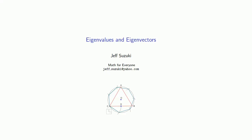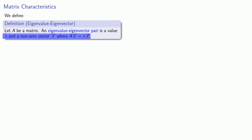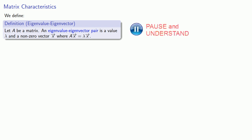One of the most important concepts of linear algebra is the concept of an eigenvalue and its associated eigenvector. Suppose A is a matrix. An eigenvalue-eigenvector pair is a value lambda and a nonzero vector x where the matrix A applied to the vector x gets us lambda times the vector x. If we think about A as some sort of linear transformation, this equation tells us that the linear transformation of A applied to x gives us a scalar multiple of x.